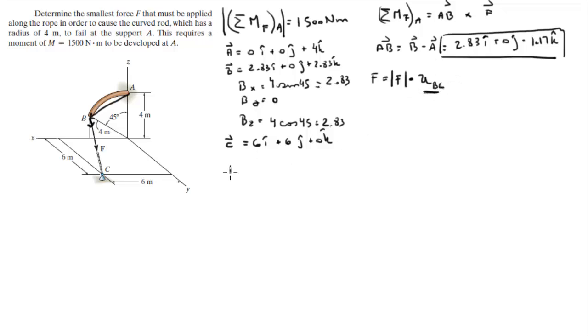To find this unit vector we need to find first the vector that goes from B to C which is vector C minus vector B, and it's 3.17i plus 6j minus 2.83k.